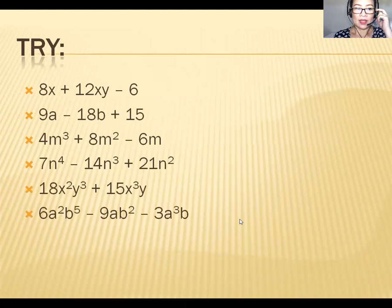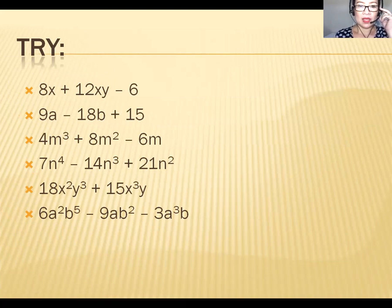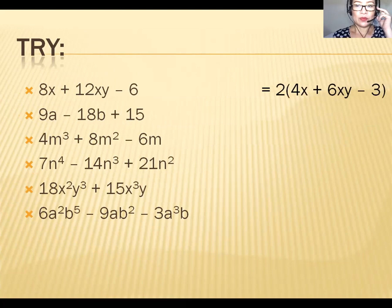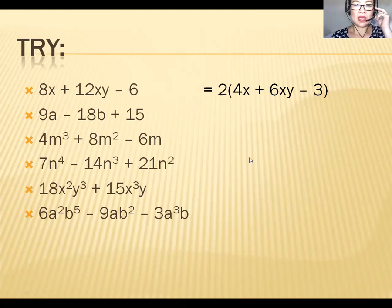Okay, let's try. Number one: 8x + 12xy − 6. What is the GCF for the coefficients 8, 12, and 6? You get 2. So the factored form is 2(4x + 6xy − 3), dividing each term by 2.